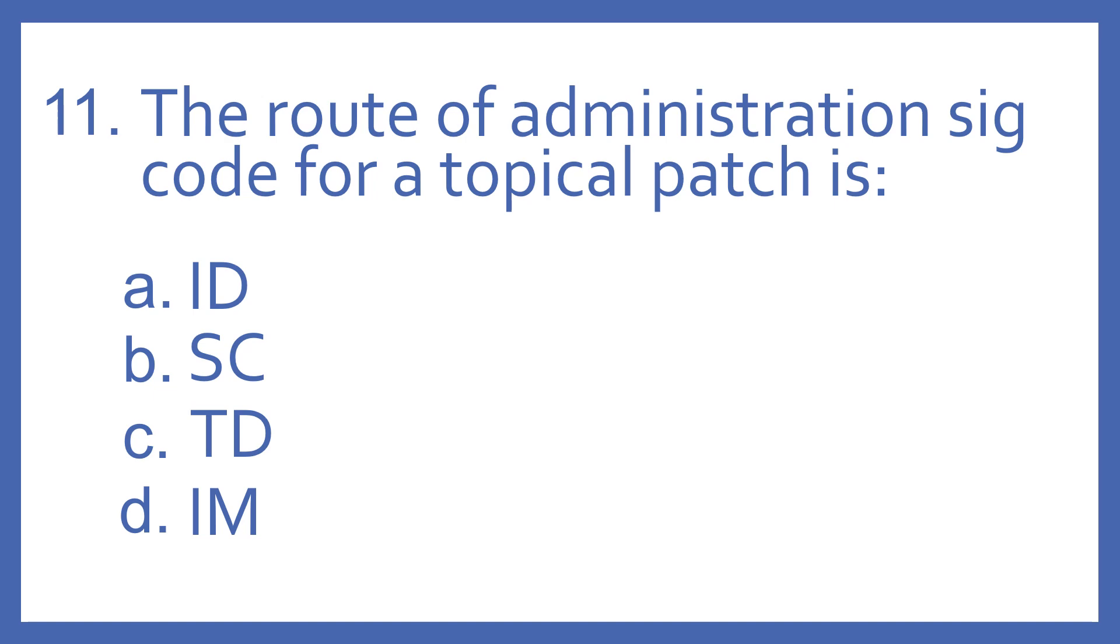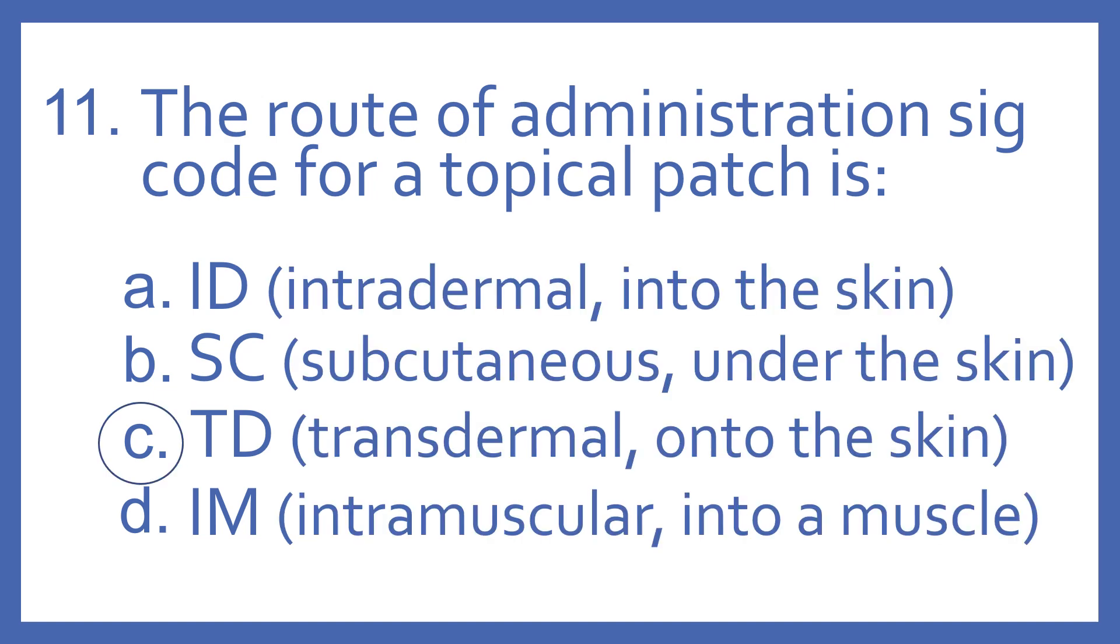Number 11, the Route of Administration SIG code for a topical patch is A, ID, B, SC, C, TD, or D, IM. And the answer is C, TD. That would be the Route of Administration SIG code for a topical patch. And TD means transdermal, which means onto the skin. ID is intradermal, which means into the skin. And this will be some types of injections. SC means subcutaneous, which is under the skin. This is commonly seen with insulin products, injections. And IM means intramuscular. This is into a muscle. Again, another type of injection, but it's one that it's given much deeper. You see this commonly with some vaccines.